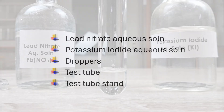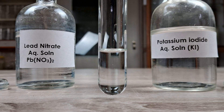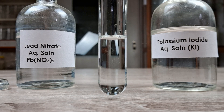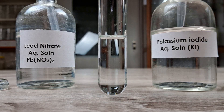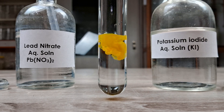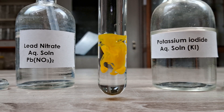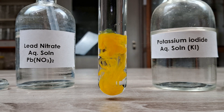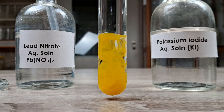Begin the experiment by taking a few ml of either one of the two aqueous solutions in the test tube. Here I'm taking lead nitrate solution. Next, add a few drops of the other solution to the tube. Observe closely. The moment the two solutions come in contact, a beautiful bright yellow precipitate of insoluble lead iodide forms in the tube.